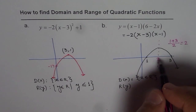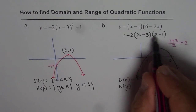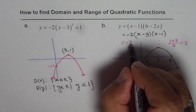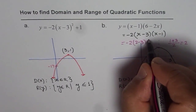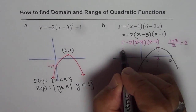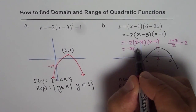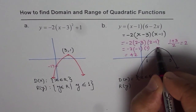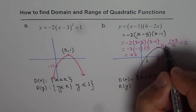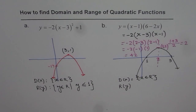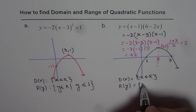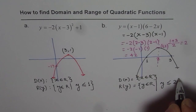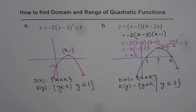Now we find the y-value by substituting x equals 2 into the equation. We get minus 2 times 2 minus 3 times 2 minus 1, which is minus 2 times minus 1 times 1, giving us plus 2. So the vertex is at (2, 2). Therefore, the range is y belongs to real numbers such that y is less than or equal to 2.